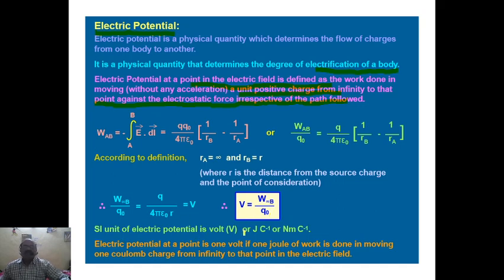The SI unit of electric potential is joule per coulomb, also written as newton meter per coulomb. The electric potential at a point is said to be one volt if one joule of work is done in moving one coulomb of charge from infinity to that point in the electric field.